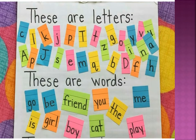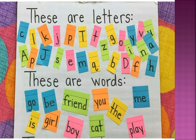Now we learn how to form words. But before that, you must know that a word can be of 2 letters, 3 letters, 4 letters, 5 letters, 6 letters, 7, and so on. Here, we can take the first word: 'go'. We take the first letter G and the second letter O, and this will become 'go'.